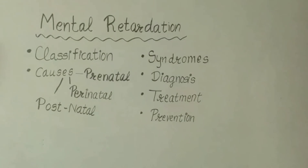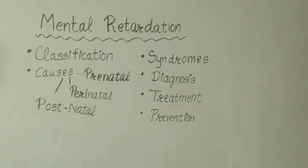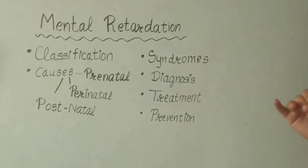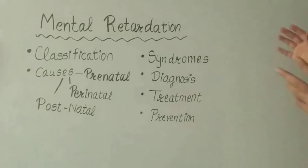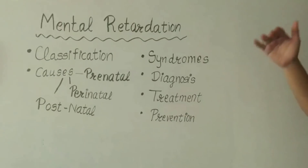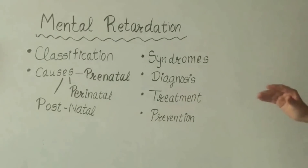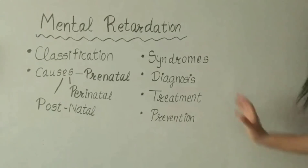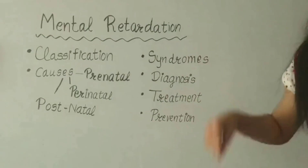Welcome back to my channel Ms. Medicine. Today we will discuss about mental retardation, covering definition, classification, causes — prenatal, perinatal, postnatal — genetic factors, biological factors, environmental factors, syndromes, diagnosis, neurological and physical examinations, imaging tests, lab diagnosis, treatment, pharmacological treatment, primary, secondary, and tertiary prevention. We will study all these things in this video.